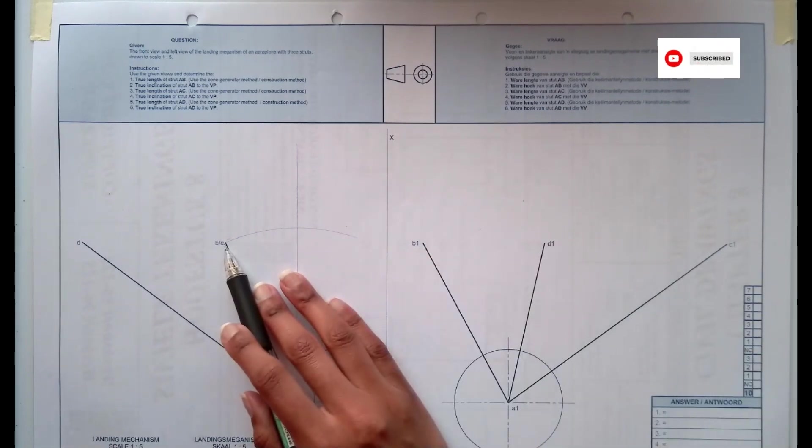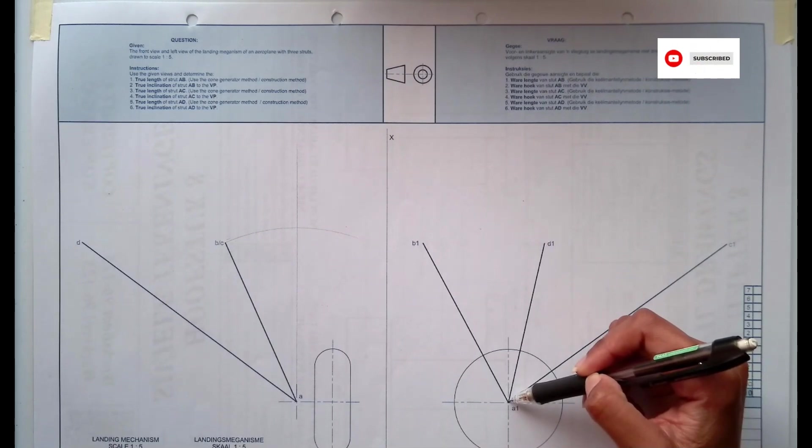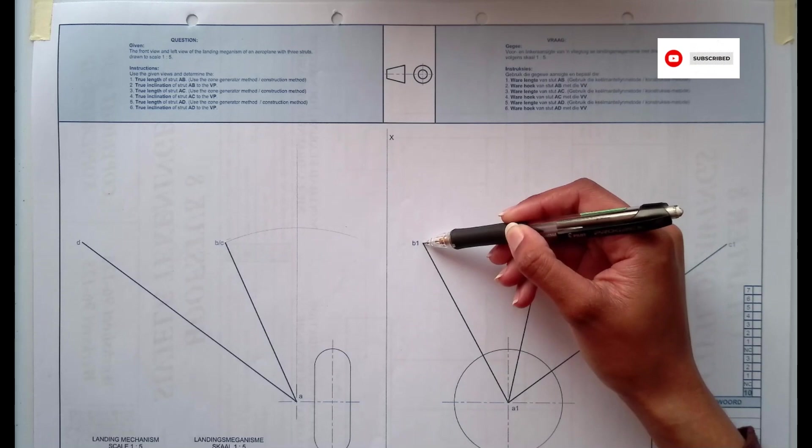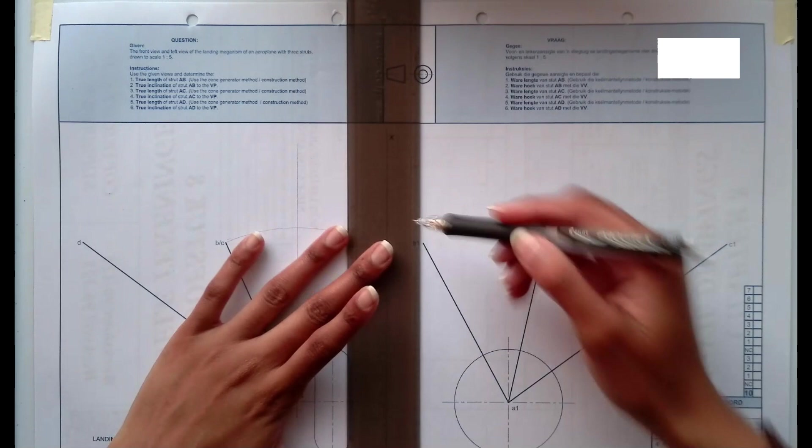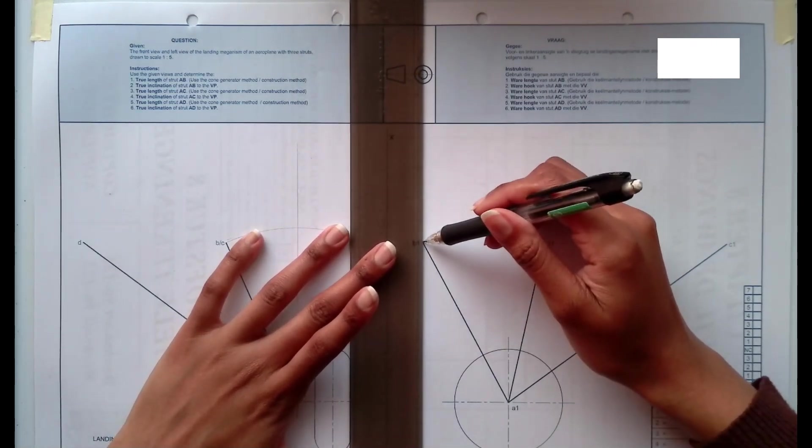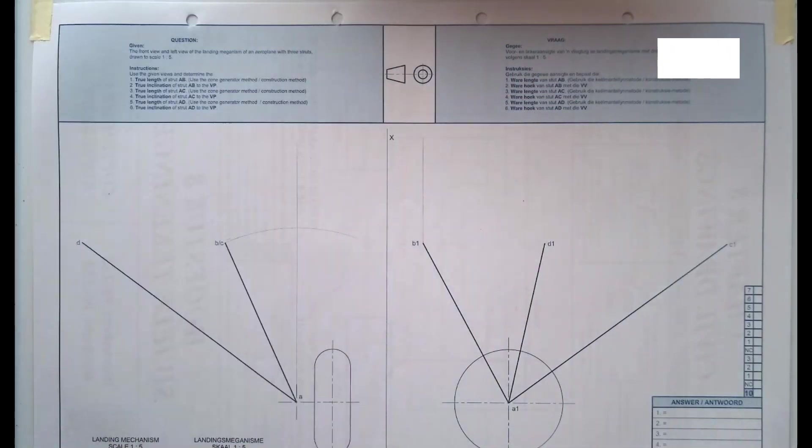And then while I'm at it, because I need to find the length of AB, we also have A1 on the left view, and we have B1. So where B1 is, I'm going to also draw a vertical plane. I'm going to extend that point vertically using a construction line.